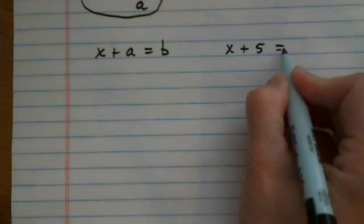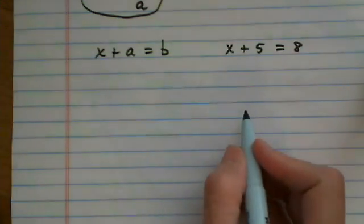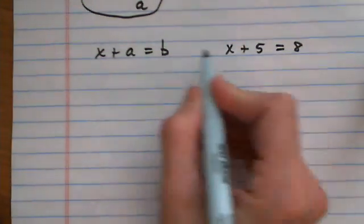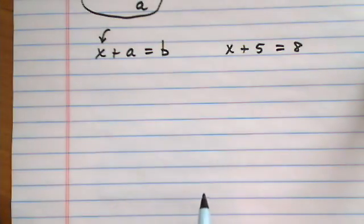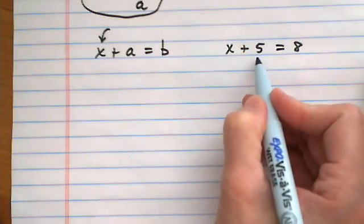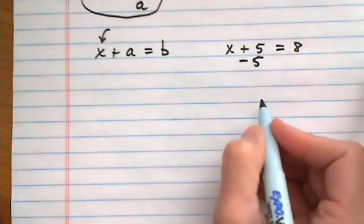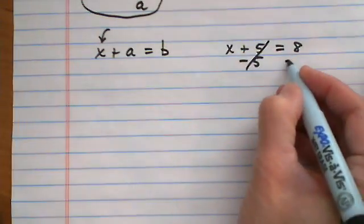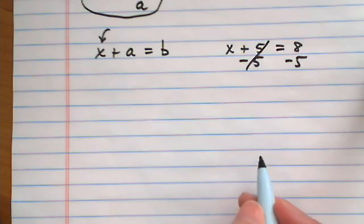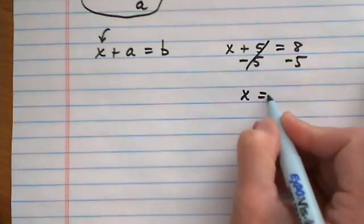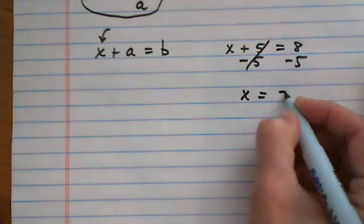If I had x plus 5 equals 8 and I want to isolate x, to get rid of the plus 5 I subtract it so it combines to 0. I have to balance it out by doing it on the other side, which gives me x equals 8 minus 5, or 3.